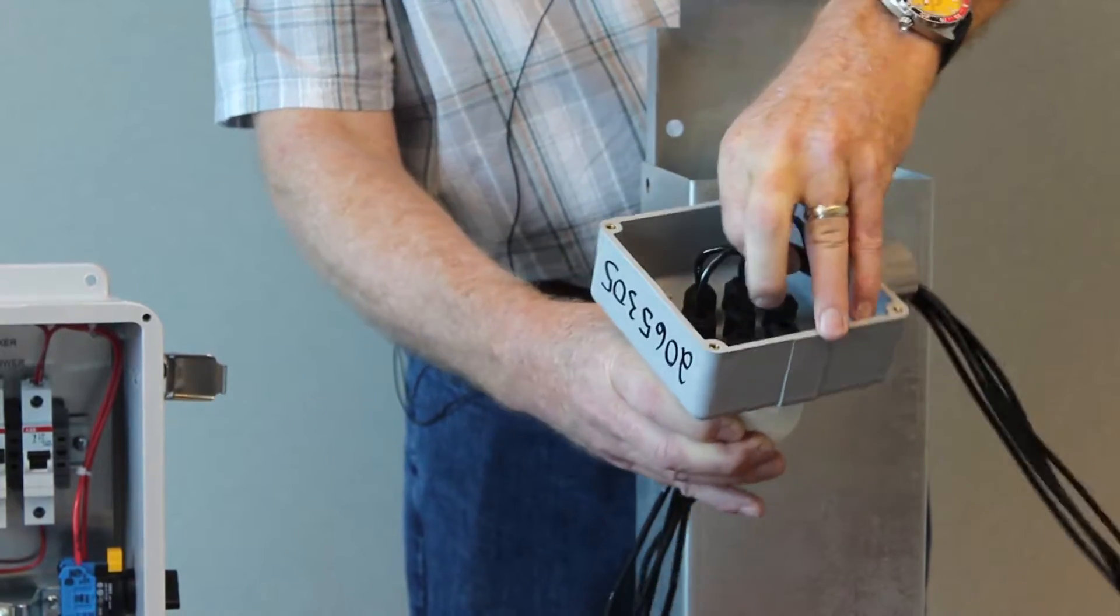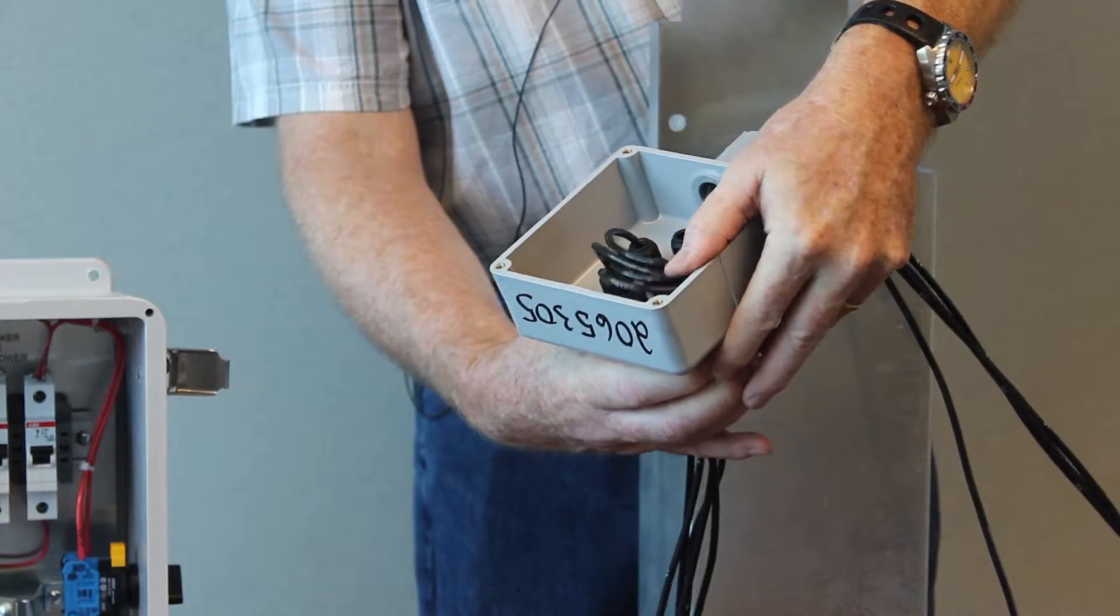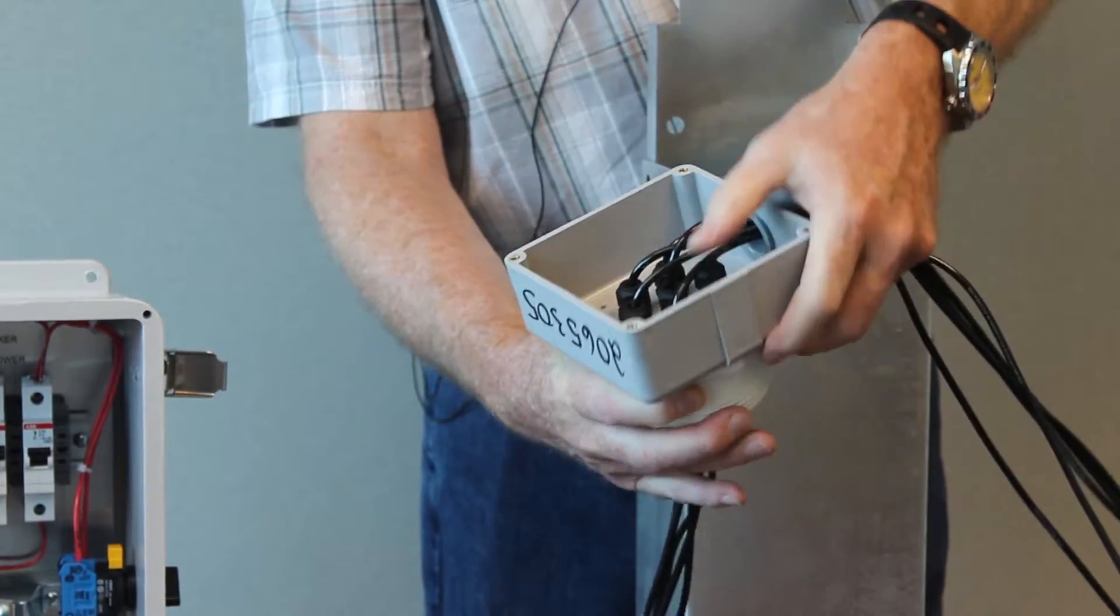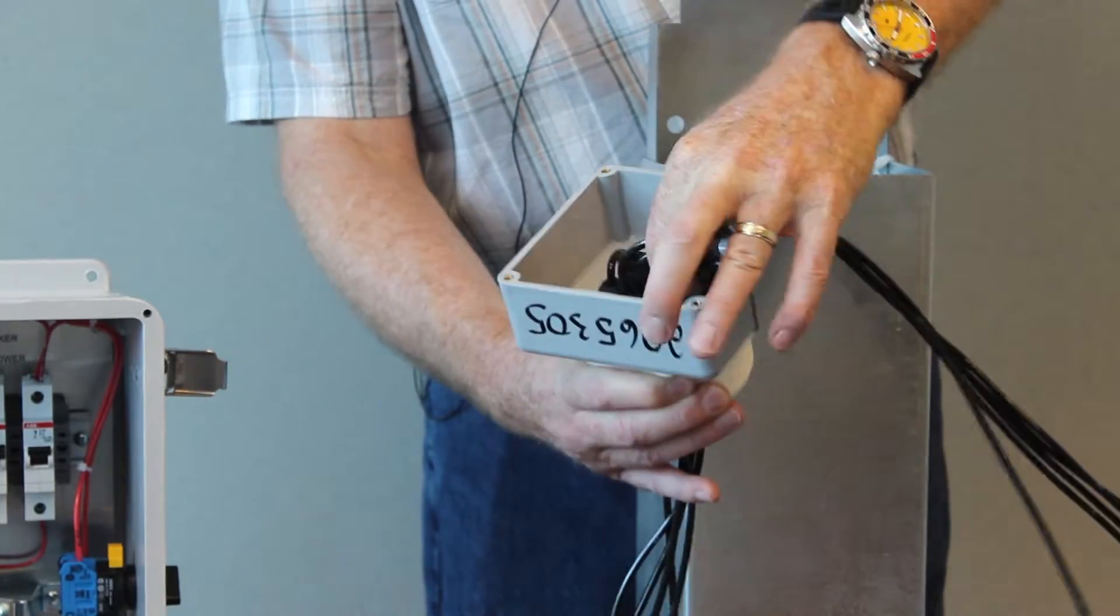It's always good to leave some wire slack inside the conduit box. Some people want to pull it tight. If you pull it tight then you cannot lengthen the probe, so it's always good to leave some slack in there.